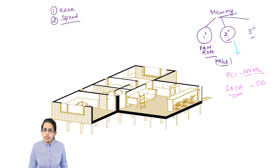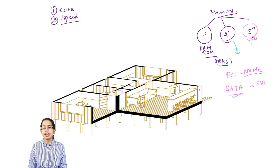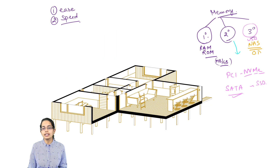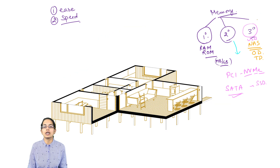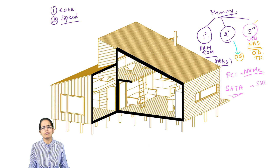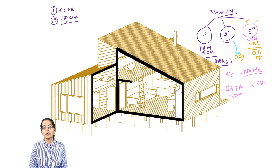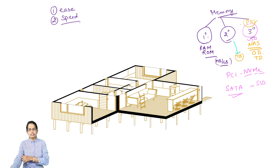Tertiary storage is attached through a peripheral component — it could be through USB, or through a network. So you have NAS, which is Network Attached Storage. You could also have optical drives, tape drives, and flash drives — all of those are part of tertiary memory. Secondary storage is generally found in terabytes, and tertiary storage is found in petabytes. Those are the usual storage capacities we talk about.